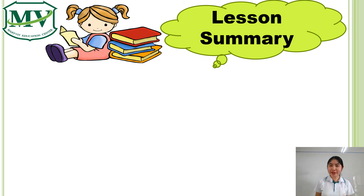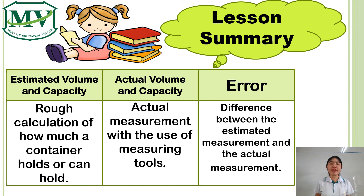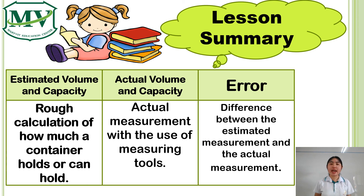To summarize our lesson: we have estimated volume and capacity, which is a rough calculation of how much a container holds or can hold. We have our actual volume and capacity, which is the actual measurement with the use of measuring tools. And of course, our error, which is the difference between the estimated measurement and the actual measurement.